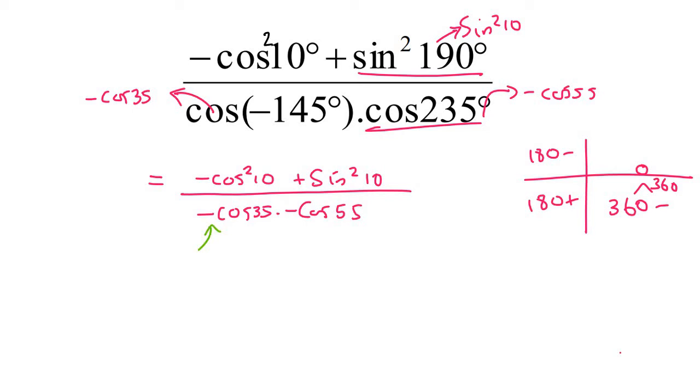Now, what I would do is I'll just multiply these two at the bottom together because then those negatives can cancel. So let's quickly do that. So it'll just end up becoming cos 35 multiplied by cos 55.